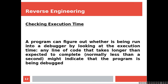Checking execution time. A program can figure out whether it is being run into a debugger by looking at the execution time. Any line of code that takes longer than expected to complete — normally less than a second — might indicate that the program is being debugged.